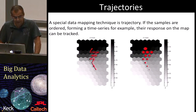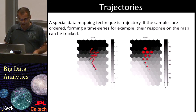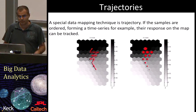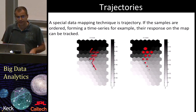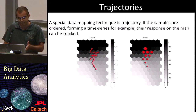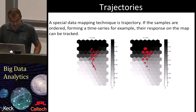Another data mapping technique you can apply using self-organizing maps uses trajectories. If our samples are ordered, for example forming a time series, their response on the map can be tracked at different times, so we can visually see how a data point moves from one cluster to another as some parameters change or evolve.